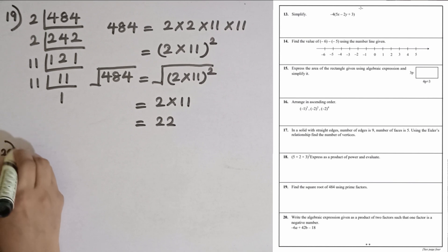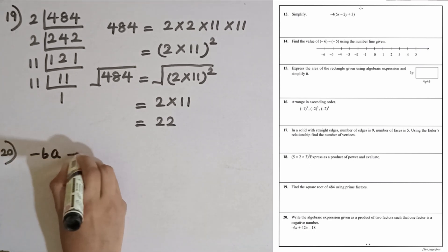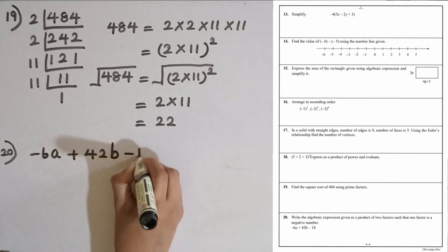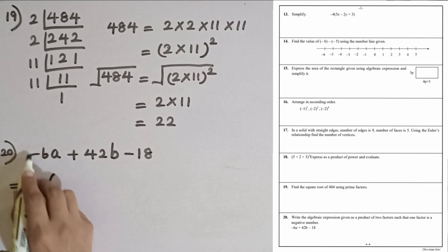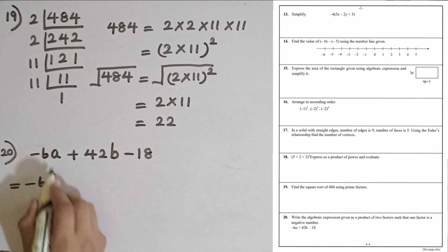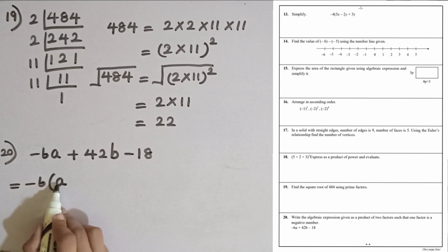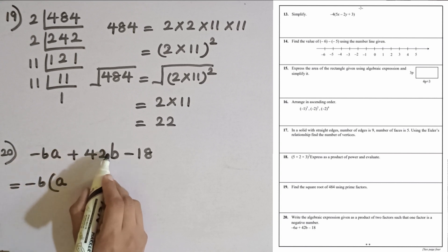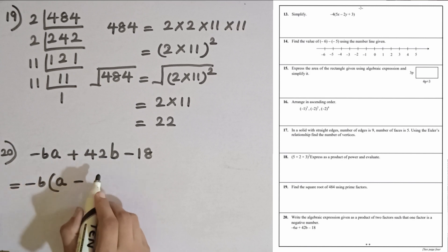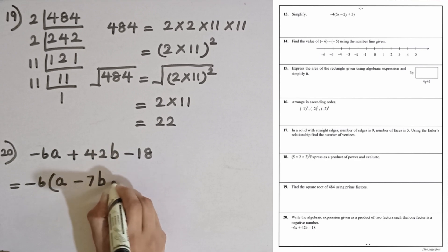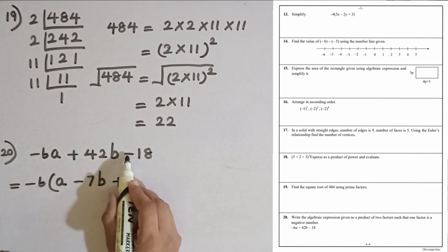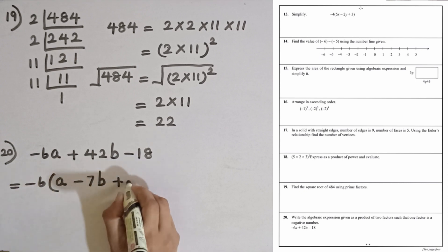Question number 20. Write the algebraic expression minus 6a plus 42b minus 80 as a product of two factors such that one factor is a negative number. Taking minus 6 out: minus 6 times a is minus 6a, so a stays. 42b divided by minus 6 gives minus 7b — but we need plus 7b inside since negative times negative is positive. Then 80 divided by 6 gives plus 13 and a remainder... so the bracket contains (a minus 7b plus 13), giving the answer minus 6(a minus 7b plus 13).